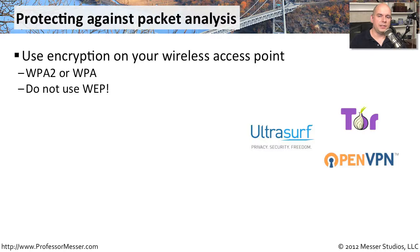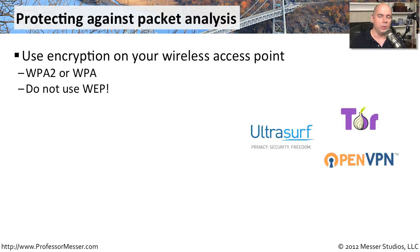If you want to prevent somebody from gathering packets and being able to see your private information, then you need to make sure your wireless access point is encrypting the traffic. Use something like WPA or WPA2 to accomplish that. Do not use WEP. There are legacy devices that only support WEP, but if you want to be sure that all of your data is absolutely private, you need to avoid that encryption type at all costs.